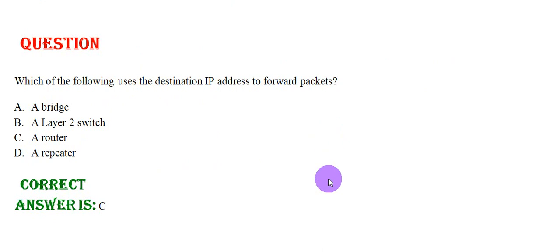Which of the following uses the destination IP address to forward packets? Option A: A bridge. Option B: A layer 2 switch. Option C: A router. Option D: A repeater. The correct answer is Option C.